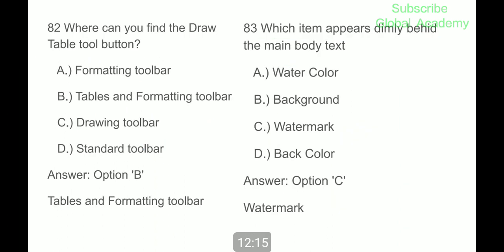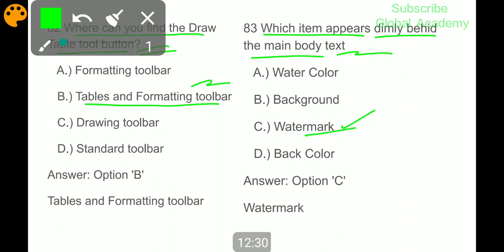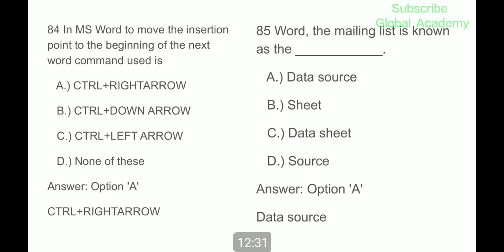Where can you find the draw tool table tool button? Tables and formatting toolbar. Which item appears dimly behind the main body text? Watermark. In MS Word, to move the insertion point to the beginning of the next word, command used is option Control plus right arrow.